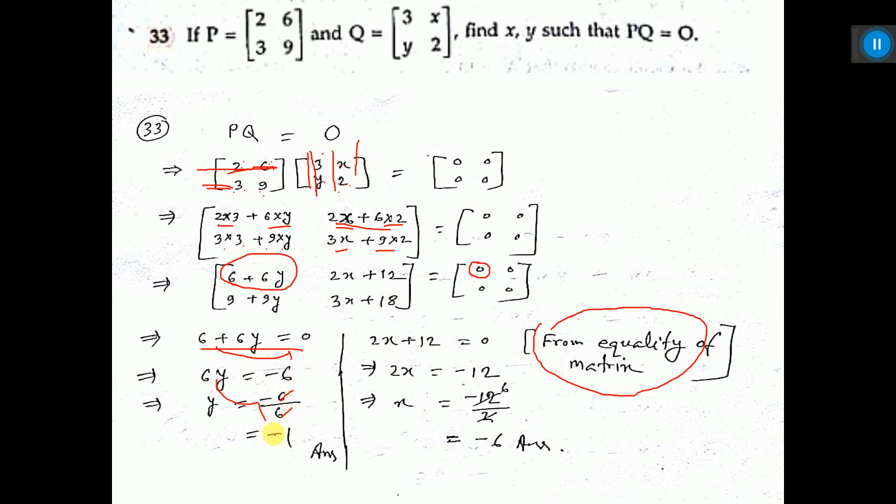Then you are getting Y equals minus 1. And again, this corresponds to this, so that is also equal to 0. So 12 you send to that side, it becomes minus 12. Again divide by 2, do cancellation, X equals minus 6. That's all.